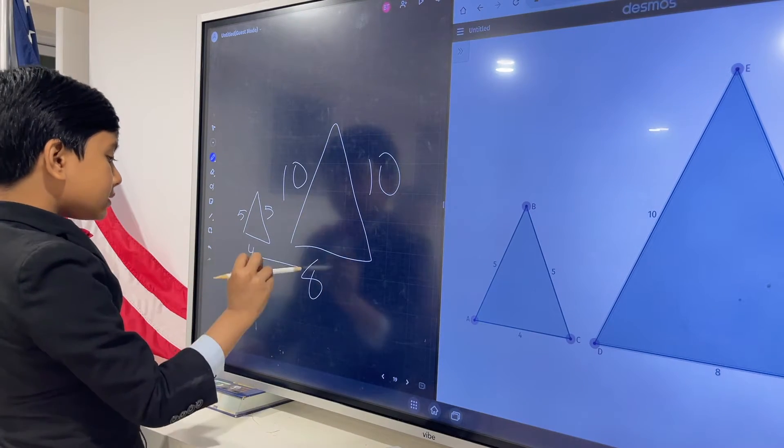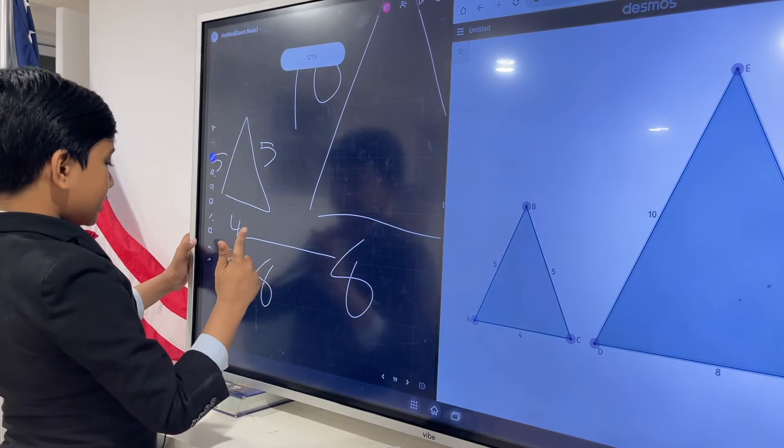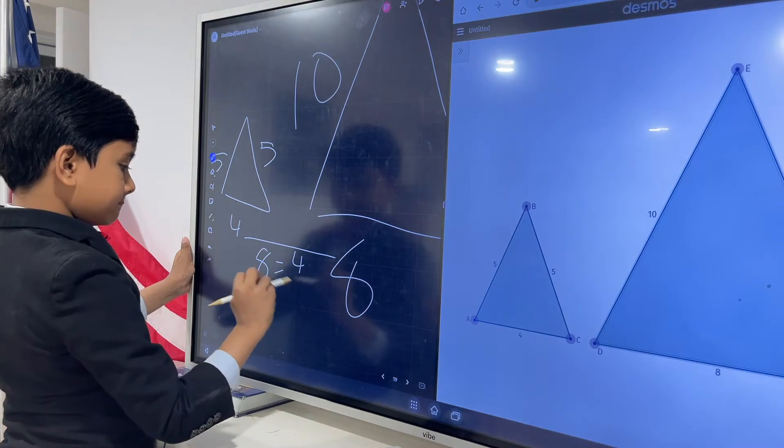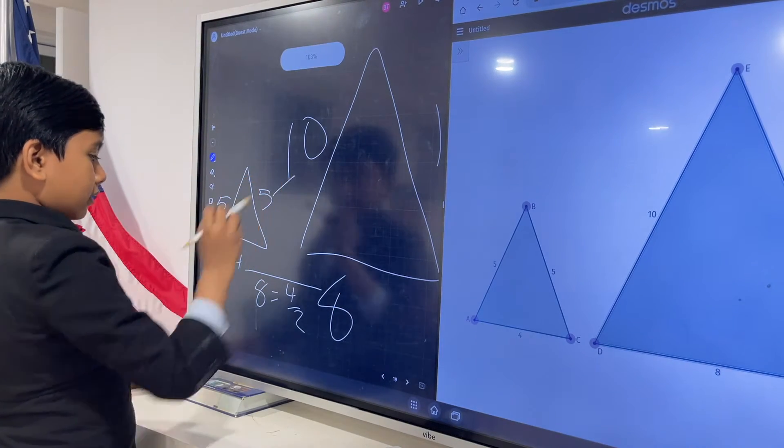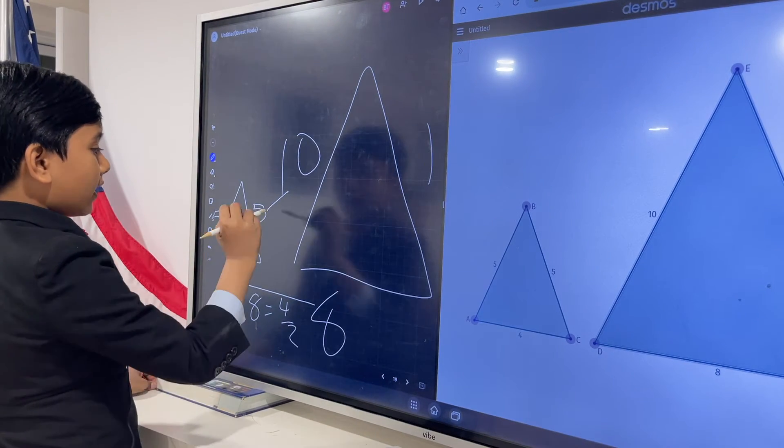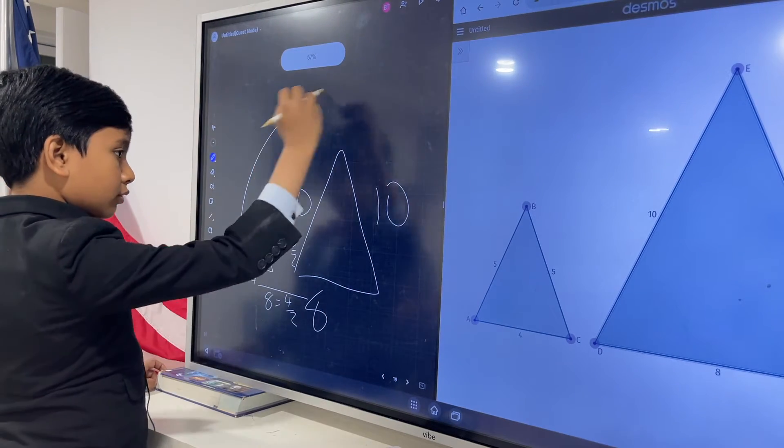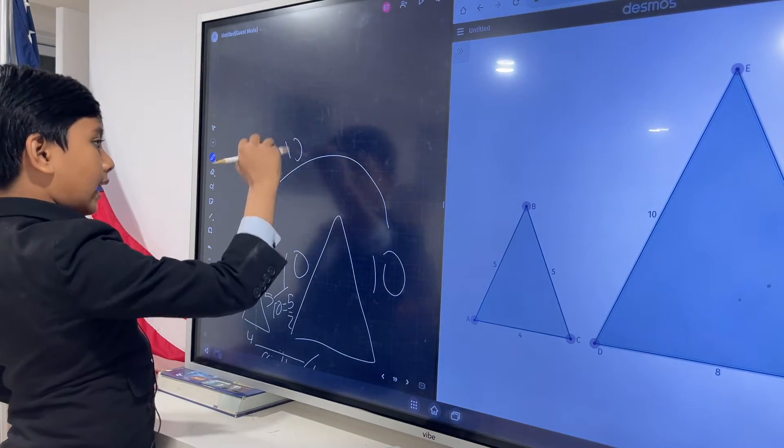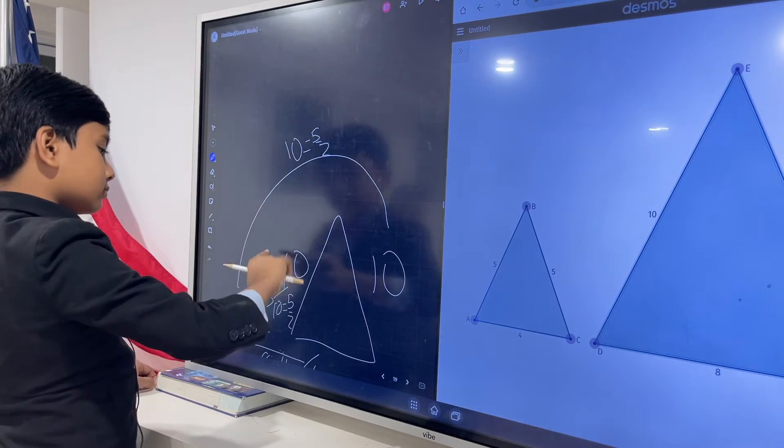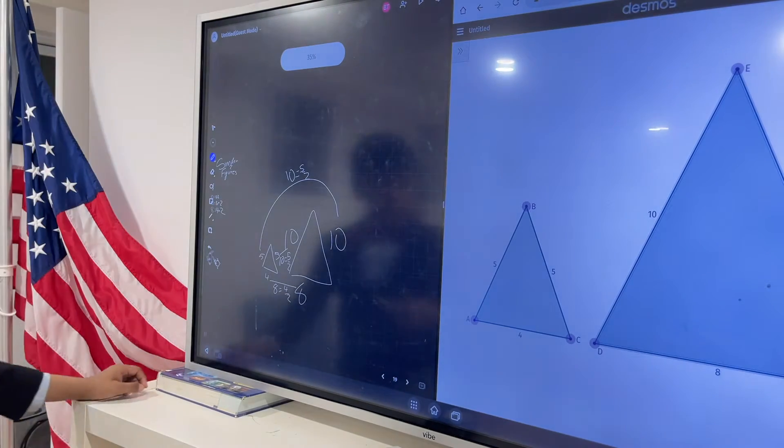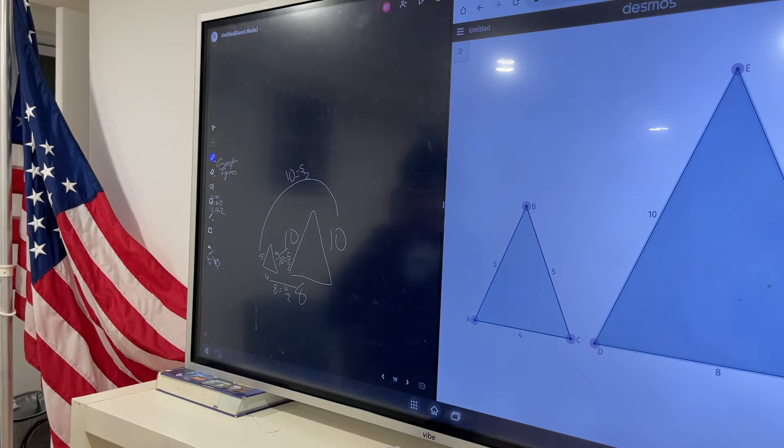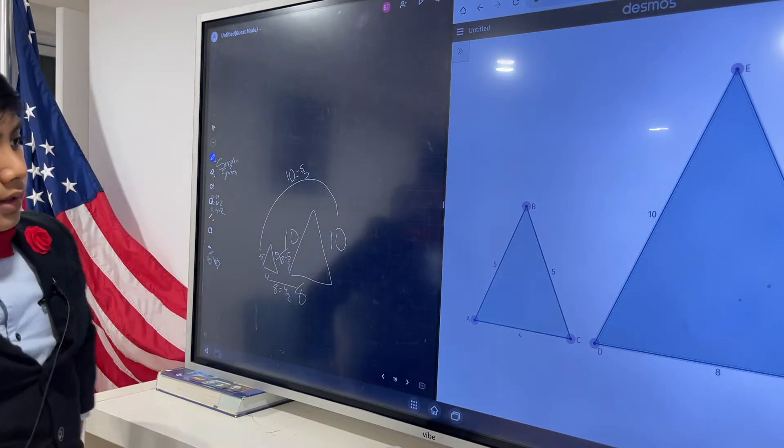And that these sides have very special relations. So this side corresponds to this side, and ten is five over two. And this side corresponds to this side, and ten is five over two. Now the biggest thing of all is that these...